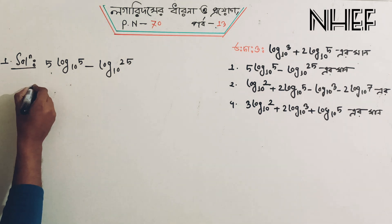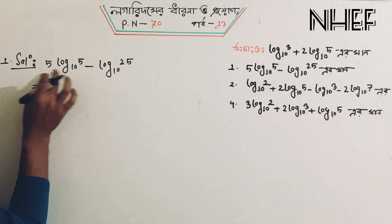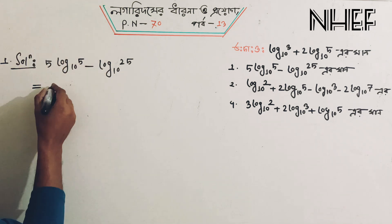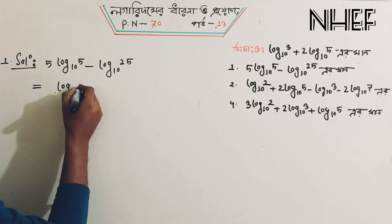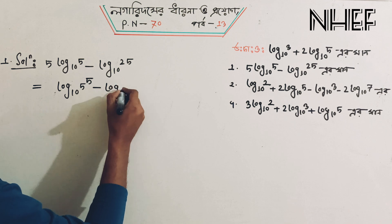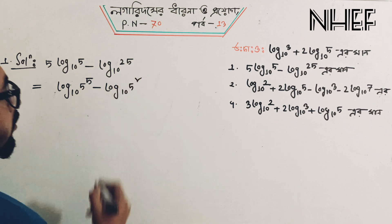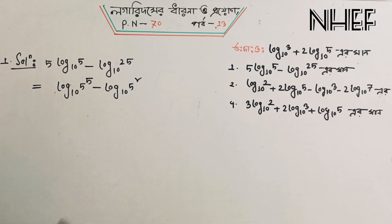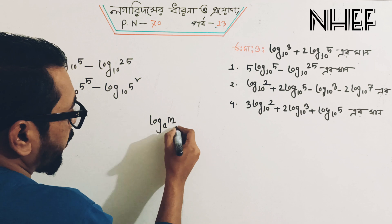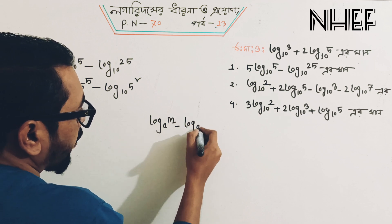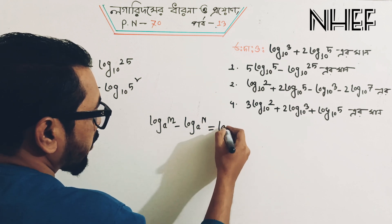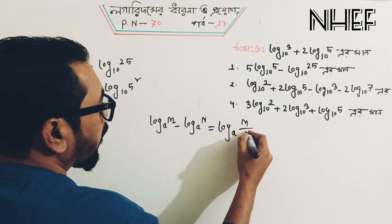So let's get equal to this. This is 10 base 25. So log 10 base 5 to the power 5 minus log 10 base 5 square — that is 25. Log A base M minus log A base N.